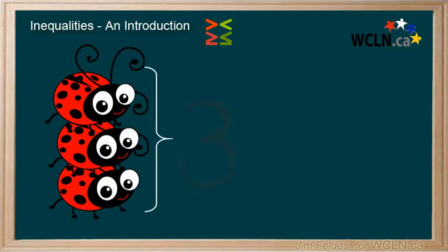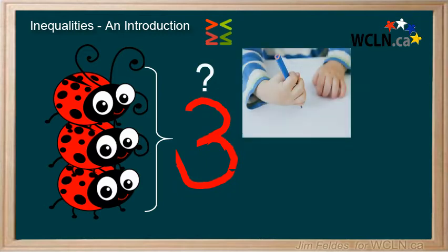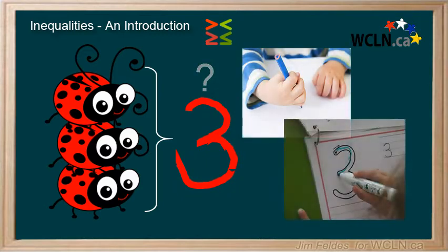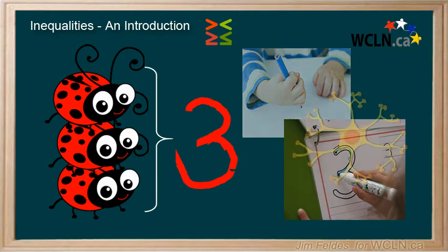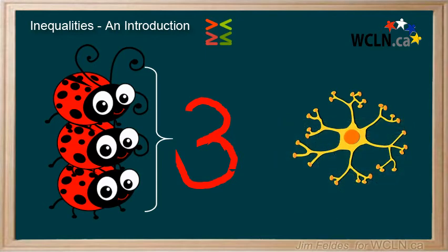Then, connecting an abstract symbol like the squiggles that form a three to mean three things was a big step, and writing such a symbol was no small feat either. By writing numbers you were expressing real things with symbols. This took the formation of many new brain connections, but you worked it out.